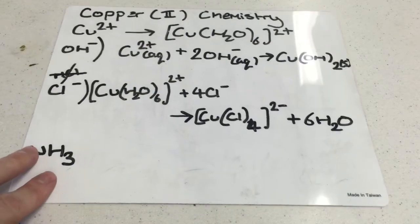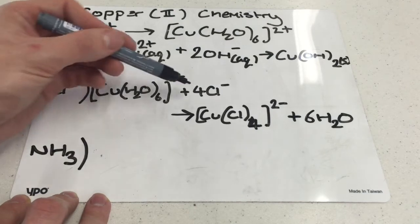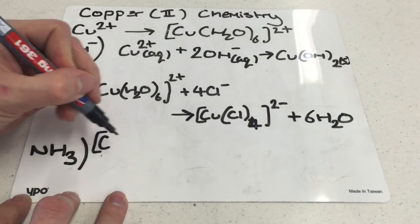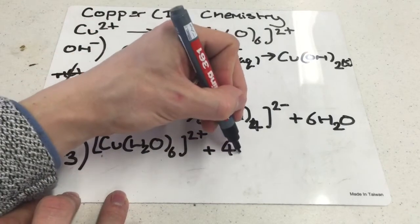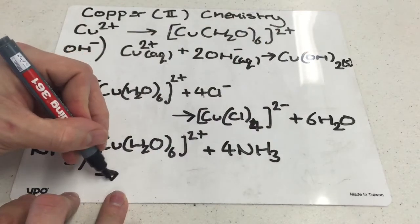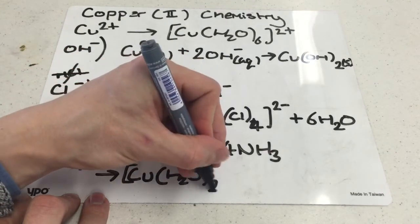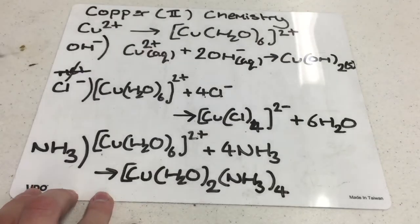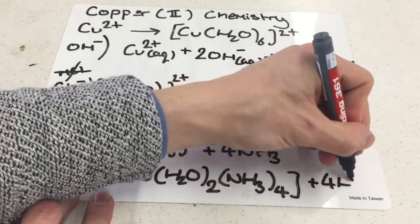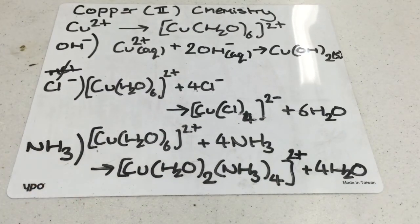The last reaction is with NH₃, which is a bit unusual. Unlike the Cl⁻ example where all ligands are replaced, copper only undergoes a partial ligand substitution with ammonia. We take the hexa aqua complex [Cu(H₂O)₆]²⁺ and react it with 4 NH₃. Only 4 of the H₂O ligands are pushed off, leaving 2 behind, giving us [Cu(NH₃)₄(H₂O)₂]²⁺ and 4 H₂O released. Since it carries a 2+ charge it is in solution, and the product is a dark blue solution.